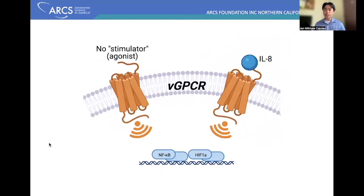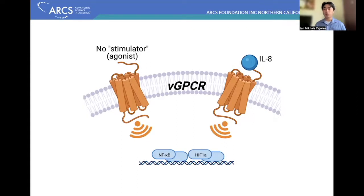Since then, there were many advances and hypotheses to try and pinpoint the exact cause of how this virus causes cancer. One of the leading candidates — the main hypothesis of the field — is that its viral G-protein coupled receptor, or VGPCR, plays a significant role in how this virus transforms cells.